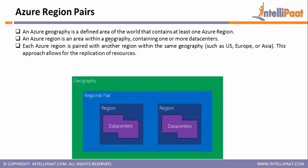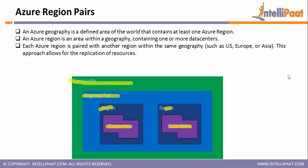A region pair is an area within a geography containing two or more data centers. For example, Mumbai and Chennai are both within the same geography — India. If I have one instance in Mumbai region and another in Chennai, they replicate each other. If one of the regions goes down, you will still be able to access your services from the other region, which falls under the same region pair.